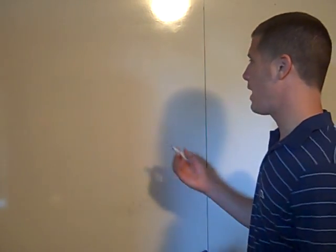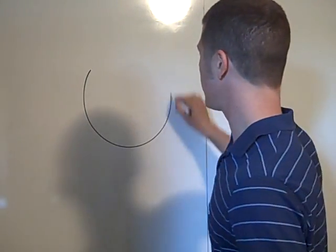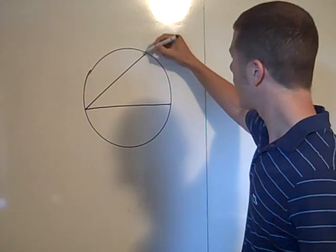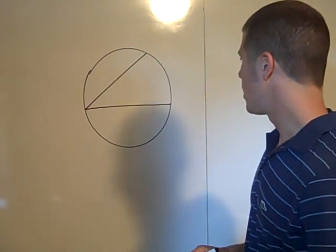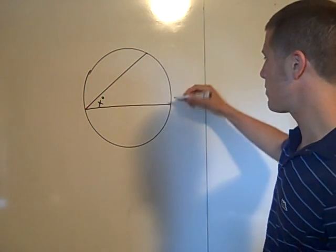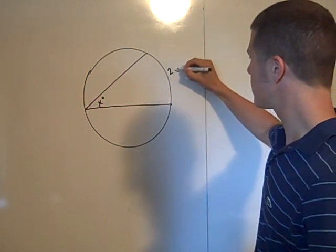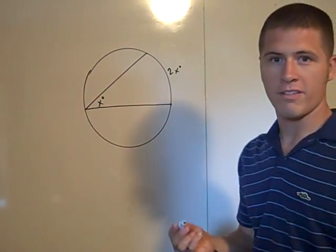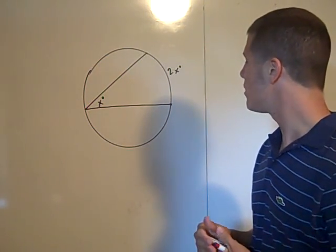This will be a partial proof of the inscribed angle theorem. It comes in three parts, and I'll show two of them. The inscribed angle theorem says that if an angle is inscribed in a circle and measures x degrees, then the intercepted arc measures 2x degrees. So the measure of the inscribed angle is half the measure of the intercepted arc.